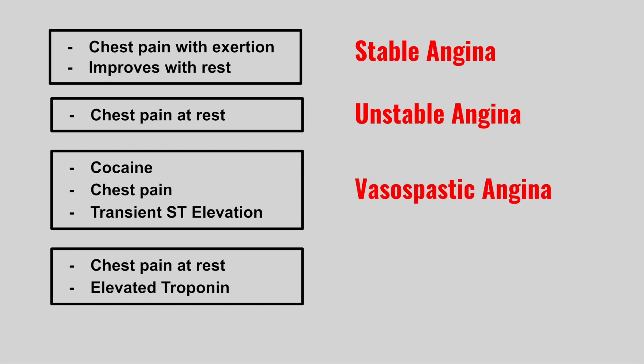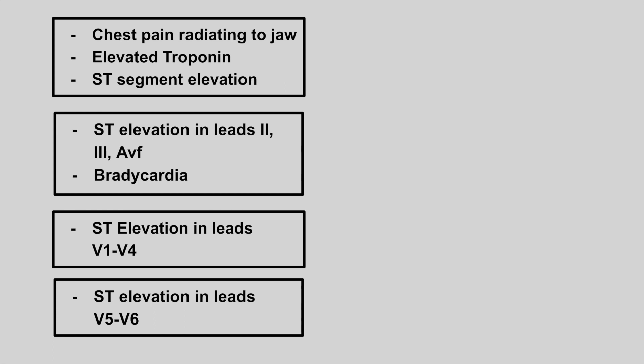That is vasospastic angina. The next one is chest pain at rest with elevated troponin and no ECG changes — this is NSTEMI. The next one is chest pain radiating to the jaw, elevated troponin, and ST segment elevations — this is a STEMI.